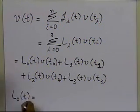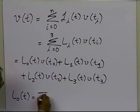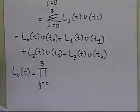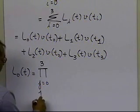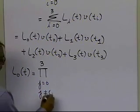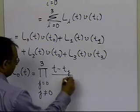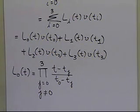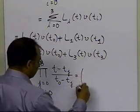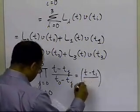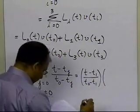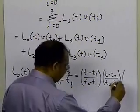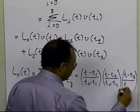Looking at L0(t), that equals the product from j=0 to 3 with j ≠ 0 of (t − t_j)/(t0 − t_j). Expanding this product, we get: [(t − t1)/(t0 − t1)] · [(t − t2)/(t0 − t2)] · [(t − t3)/(t0 − t3)].